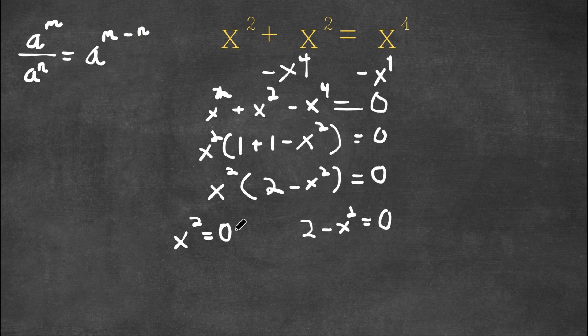Now for x squared equals 0, well, this is simple. The only number that's squared that equals 0 is simply just 0. So for this, we have x is equal to 0. That is one solution.